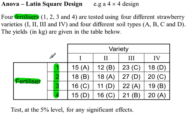Highlighted in green are the fertilizers. There are four levels. For varieties there are four levels, and the same again for soil types, there are four levels. Hence a 4x4 Latin square design.